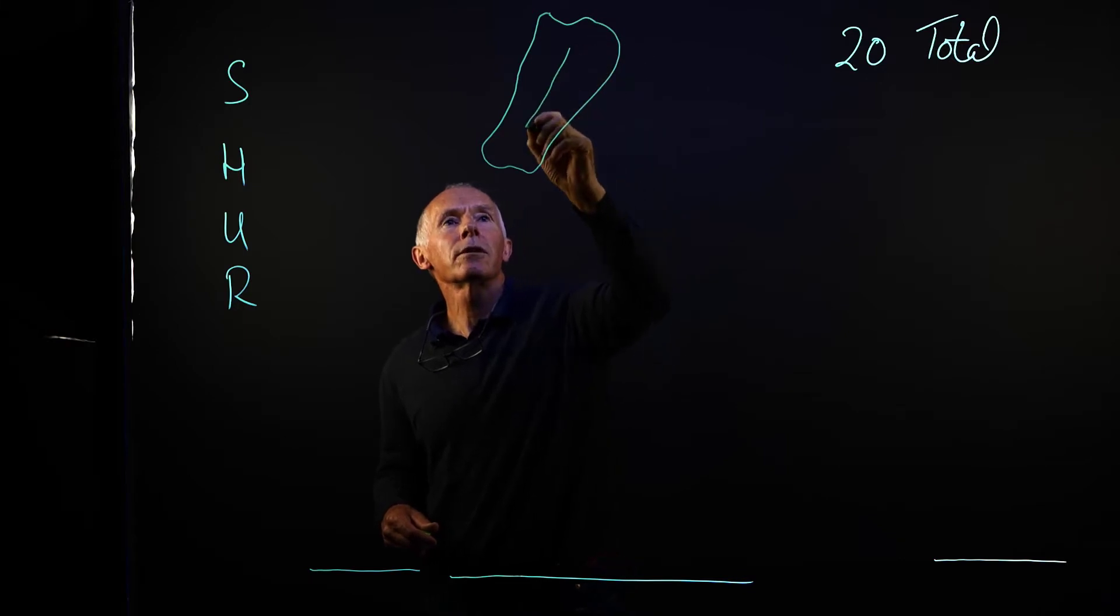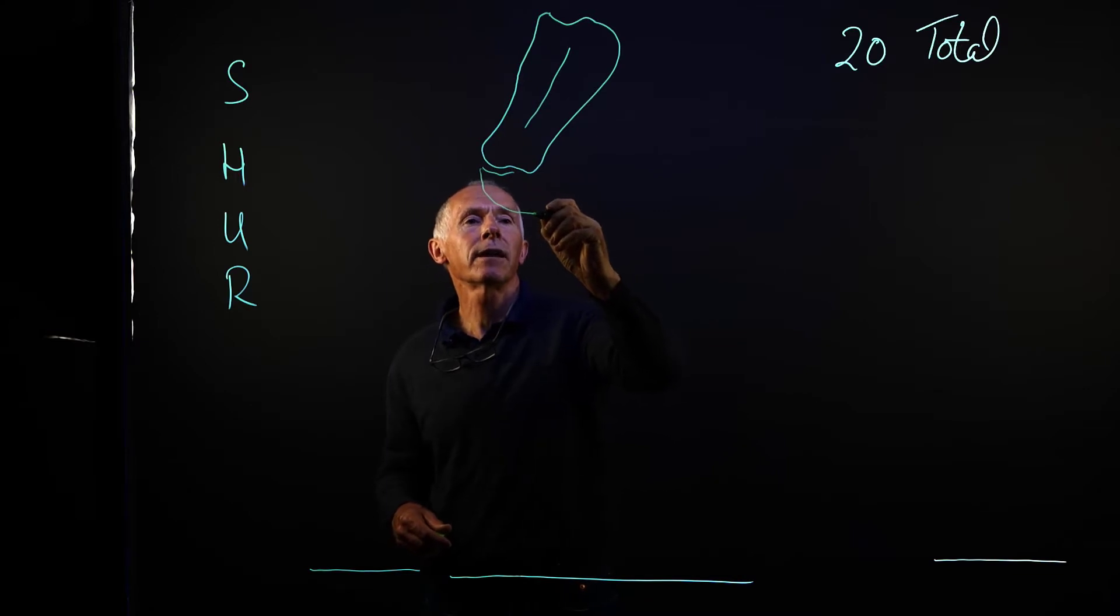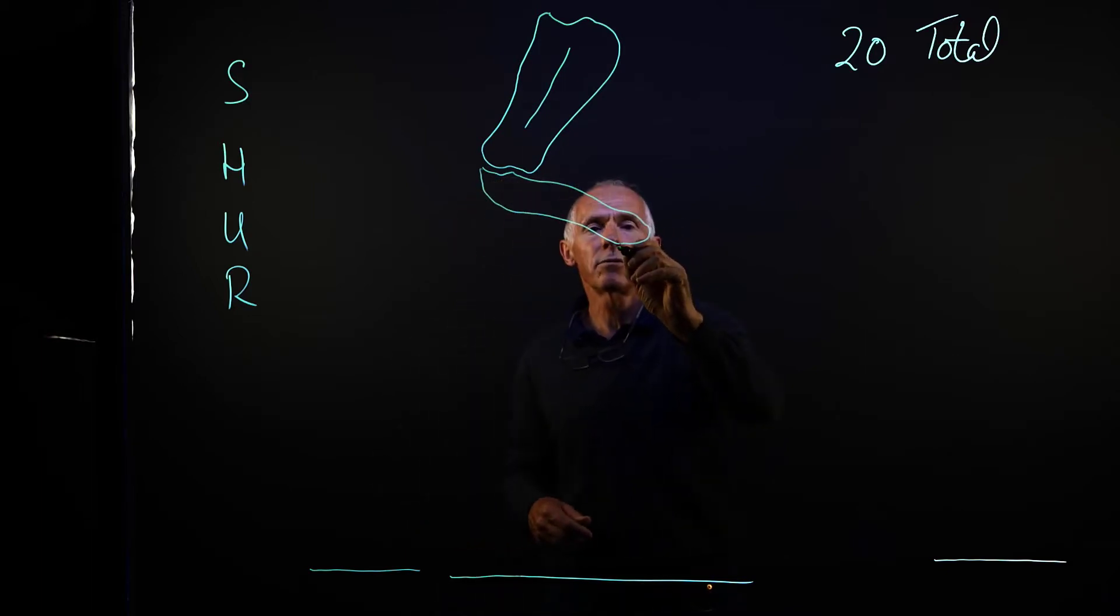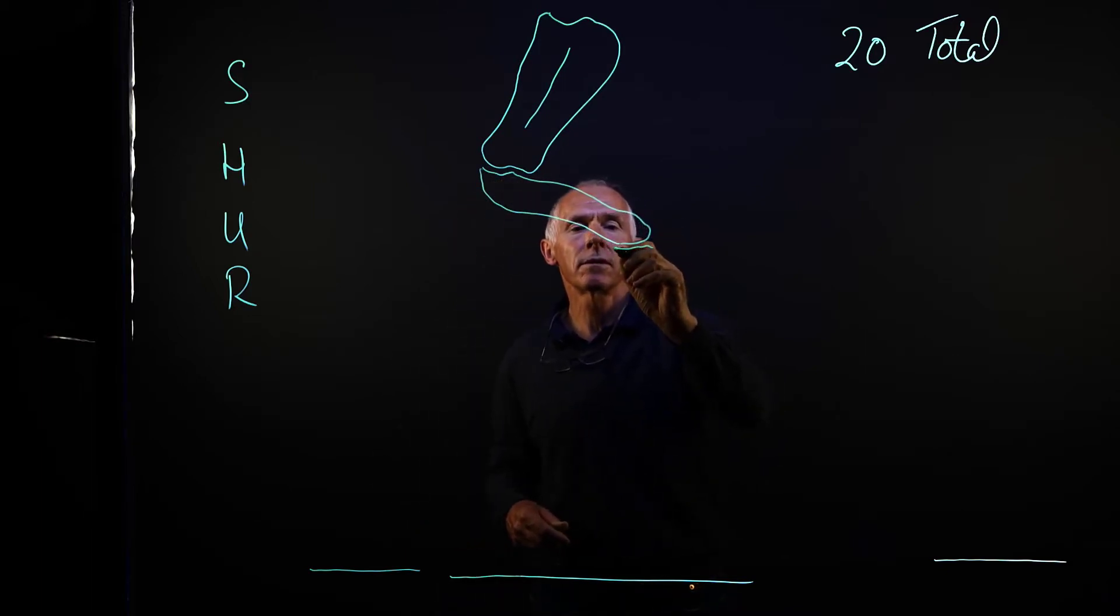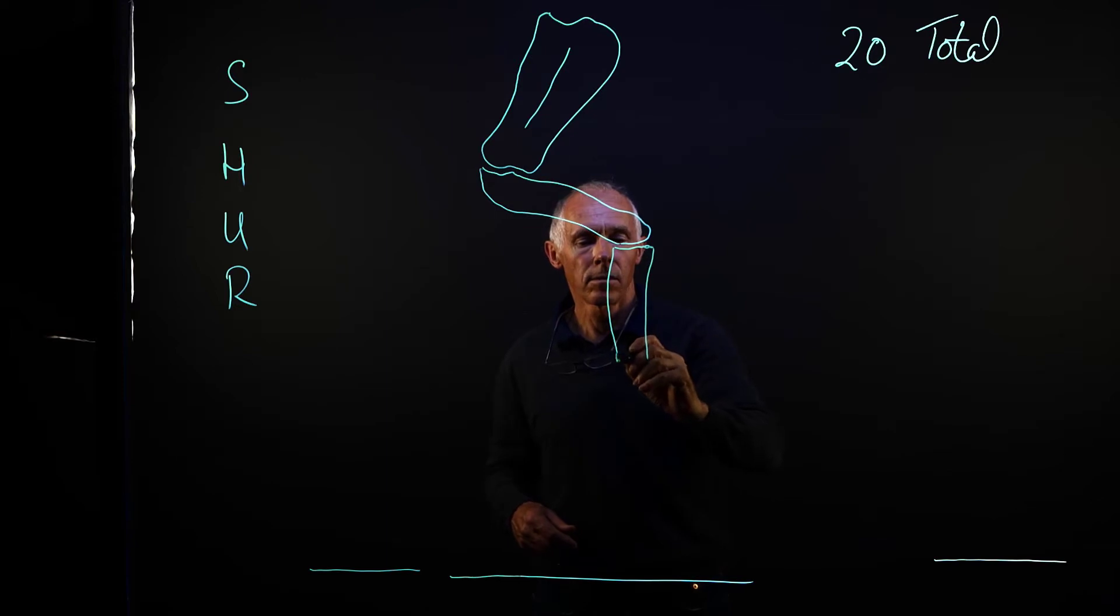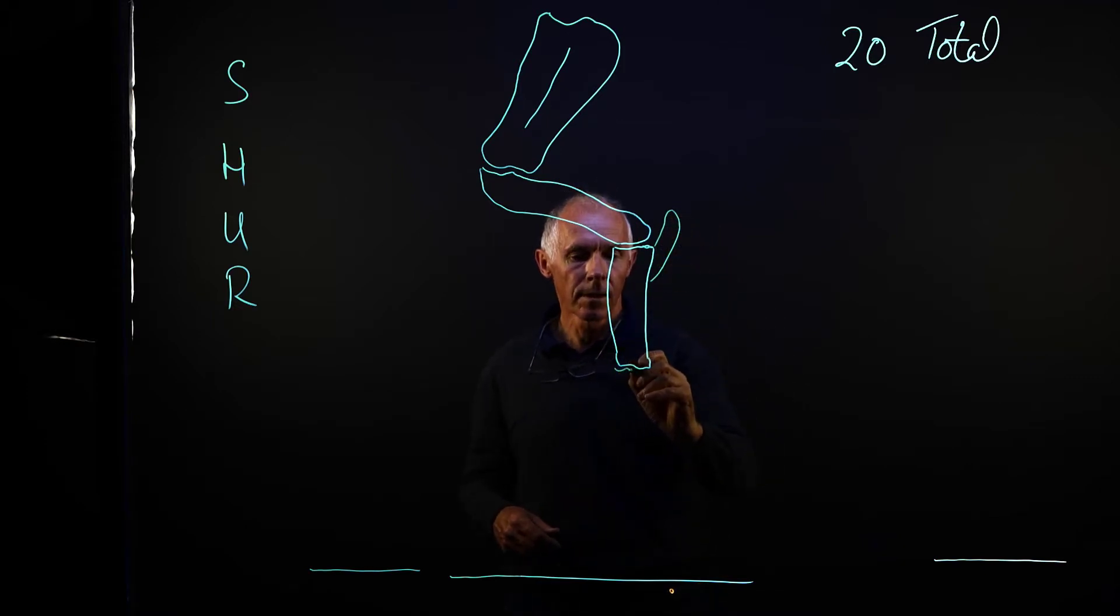So first of all we start out with the scapula, the shoulder blade, then off that we have the humerus. We don't have to be really accurate with the shape of the bone, we just need to be able to locate them and name them. Practicing drawing is probably the easiest way. I think most farriers are visual learners.